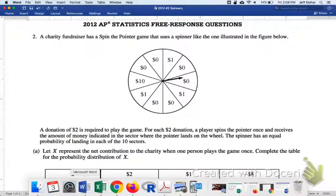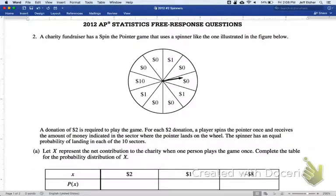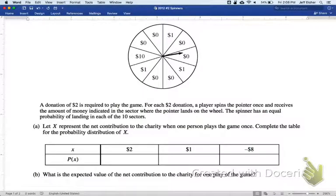So we got an equally sliced pie here, it looks like. Donation of $2 is required to play the game for each $2 donation. Player spins once, receives the amount of money indicated, equal probability of landing in 10 sectors. So we got question A, find X. X is $2, $1, negative $8, complete the table for the probability distribution.